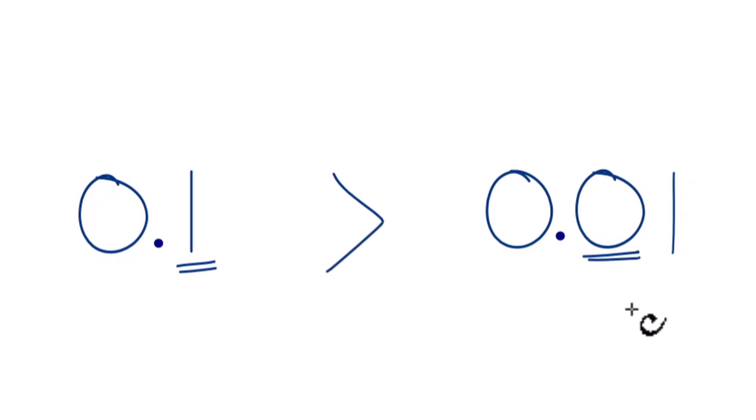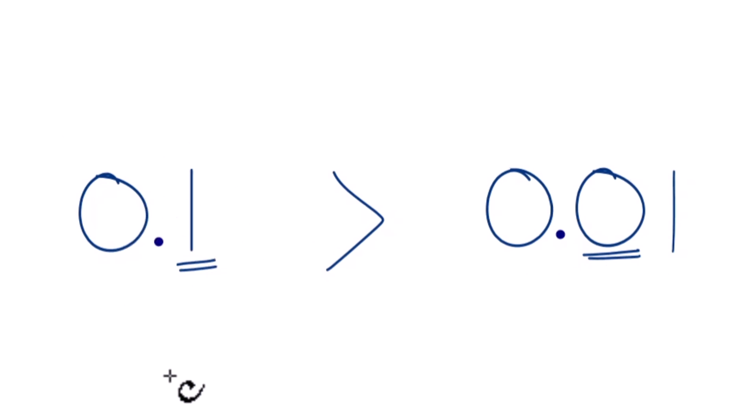Sometimes teachers want you to use fractions to figure this out. So if you convert 0.1 to a fraction, you get 10 over 100.